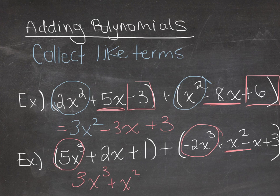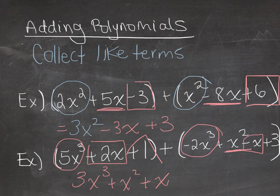Now I'll look for x's next. So I see I have a positive 2x here and I have a negative x here. So 2x minus x will be a plus x. And then lastly I'll look at my constants. So I have plus 1 and plus 3. So that will be plus 4.